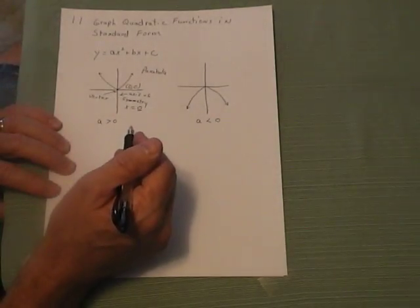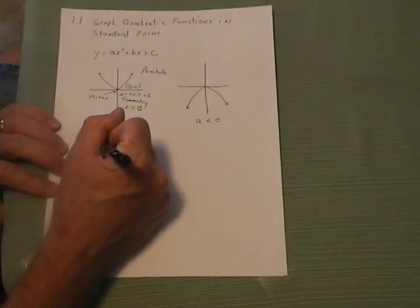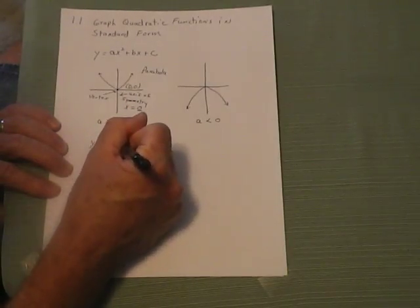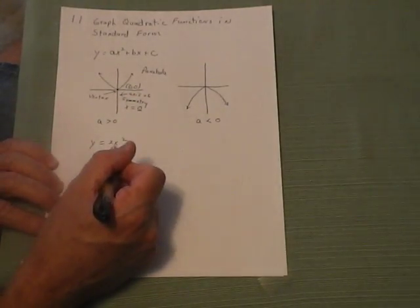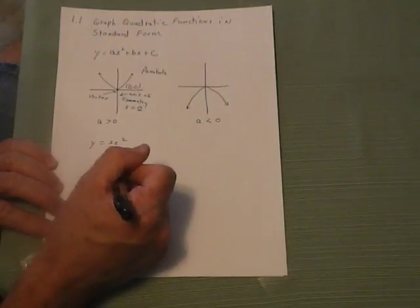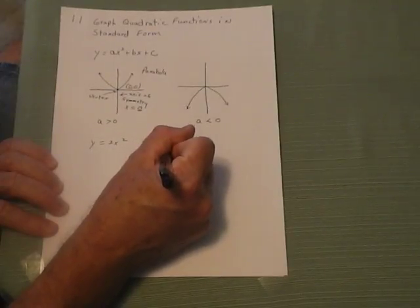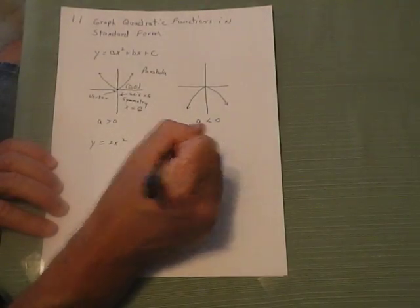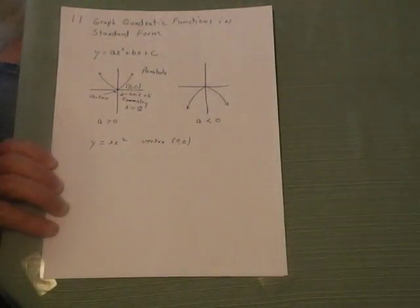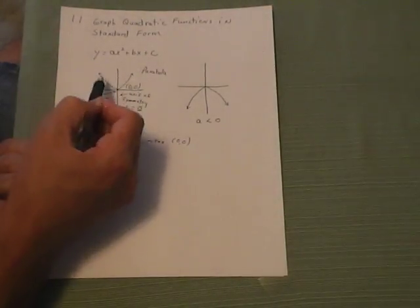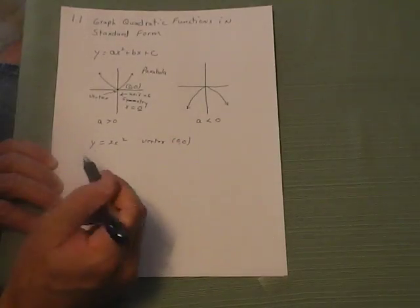Let's compare the graphs of a quadratic in the form y equals 2x squared. Notice we have an a value but no b or c. When this happens, we know the vertex will always be at (0, 0). The 2 will affect how the parabola opens and at what degree — in other words, whether it's going to be tall and skinny or short and wide.